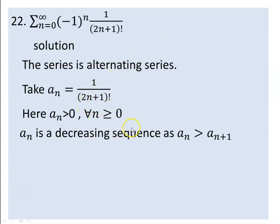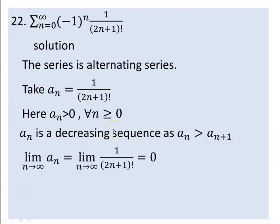If we look at positive — for whatever n value you may take, greater than or equal to 0, this is always positive. If we look at the condition: positive — check 1. Decreasing — check 2. If we look at the limit going to 0 — check 3. According to the alternating series test, the series convergence will be confirmed.